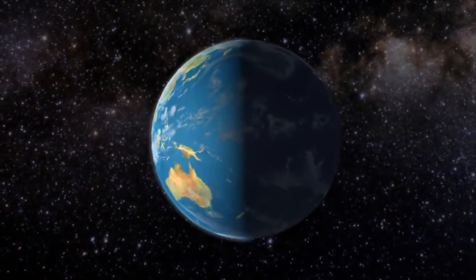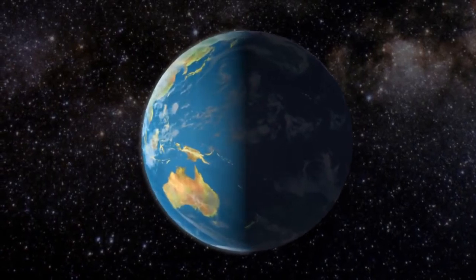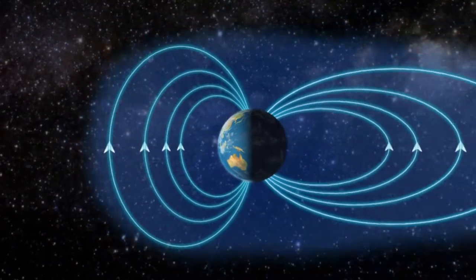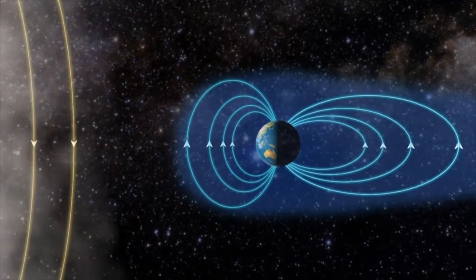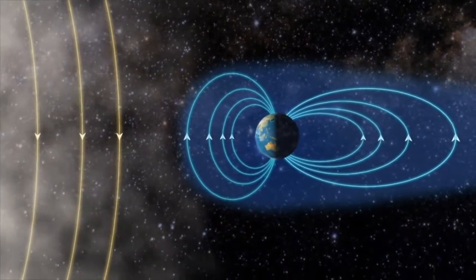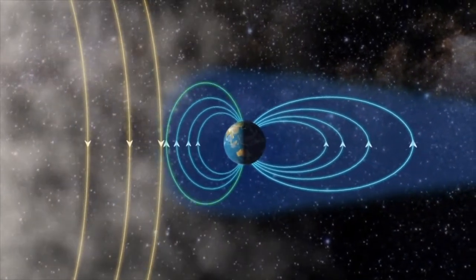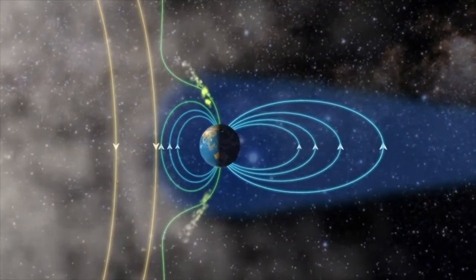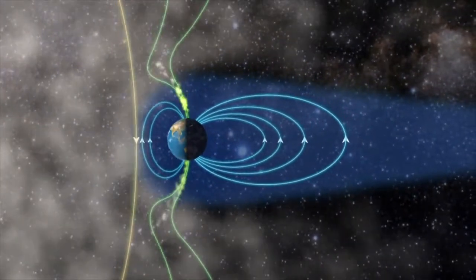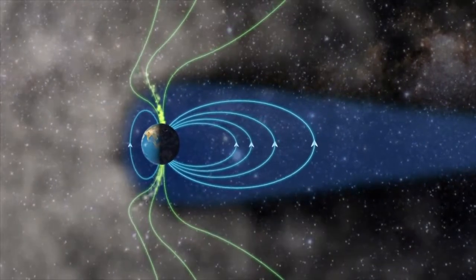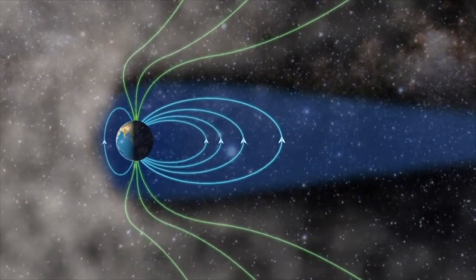When the solar storm reaches our planet, something strange happens. An invisible shield, the Earth's magnetic field, deflects the storm. The magnetic fields couple together and create a funnel where the gas streams down on the daylight side of the pole. This is the daylight aurora.